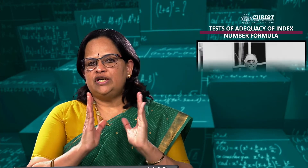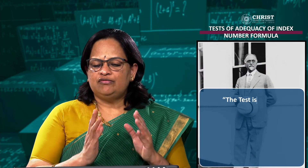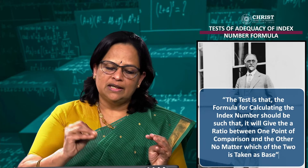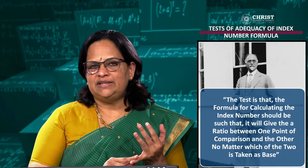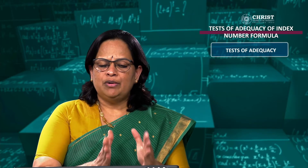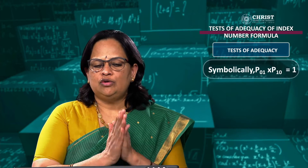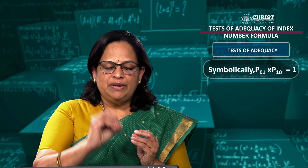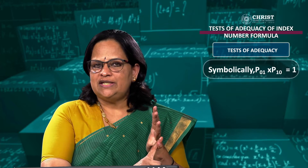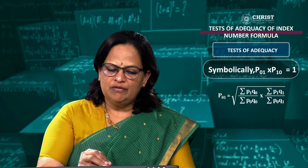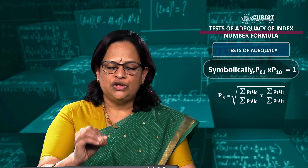In the words of Professor Fisher: the formula for calculating an index number should be such that it will give the same ratio between one point of comparison and the other, no matter which of the two is taken as the base year. Symbolically, P01 × P10 = 1. For Fisher's ideal index, P01 is the square root of (σP1Q0/σP0Q0) × (σP1Q1/σP0Q1), where 2020 is the base year and 2021 is the current year.